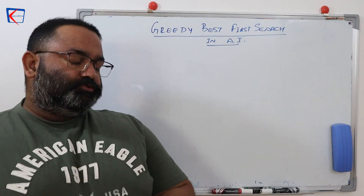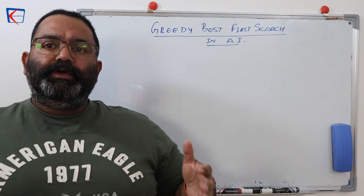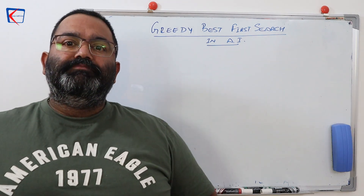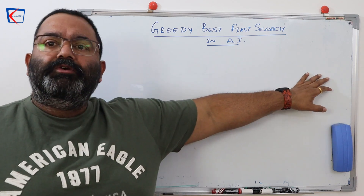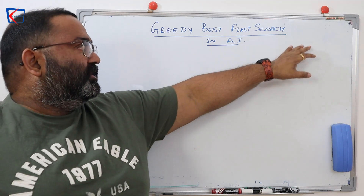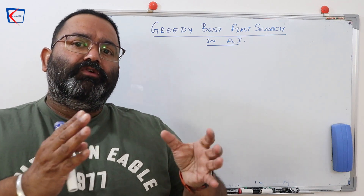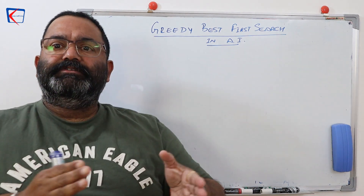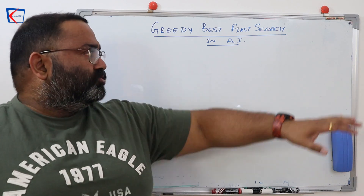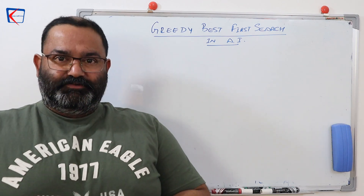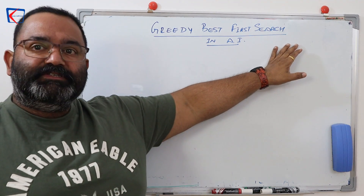Welcome to this video where I'll explain Greedy Best First Search in AI. This search uses something called heuristics, and it is one of the searches used in informed search. In informed search, we use some sort of information which guides our search process. There are many different algorithms in informed search, and one of them is Greedy Best First Search.